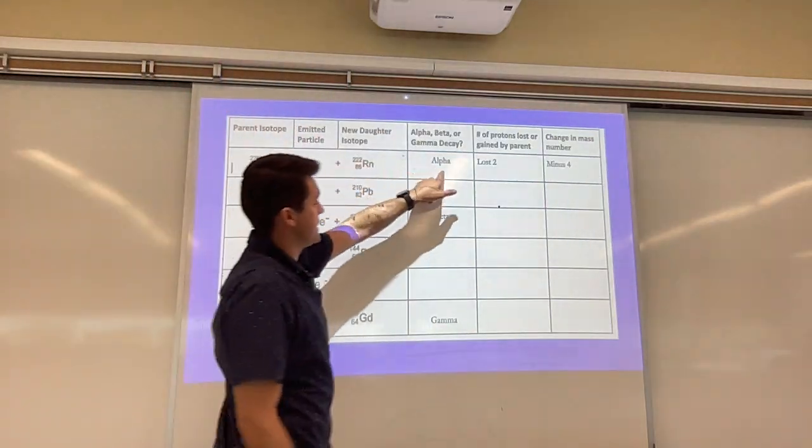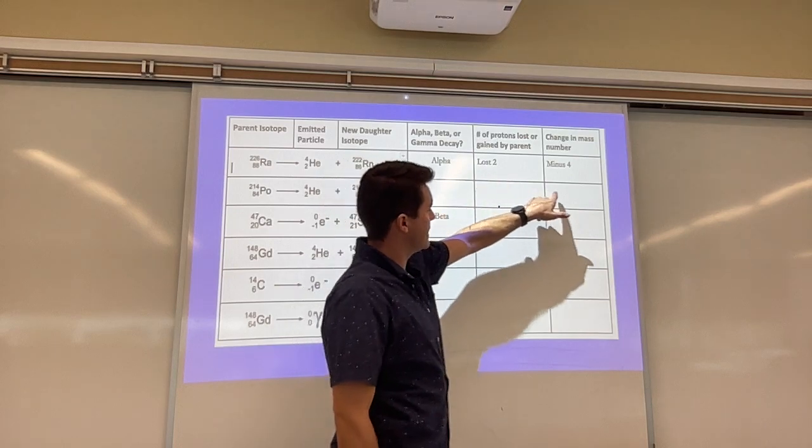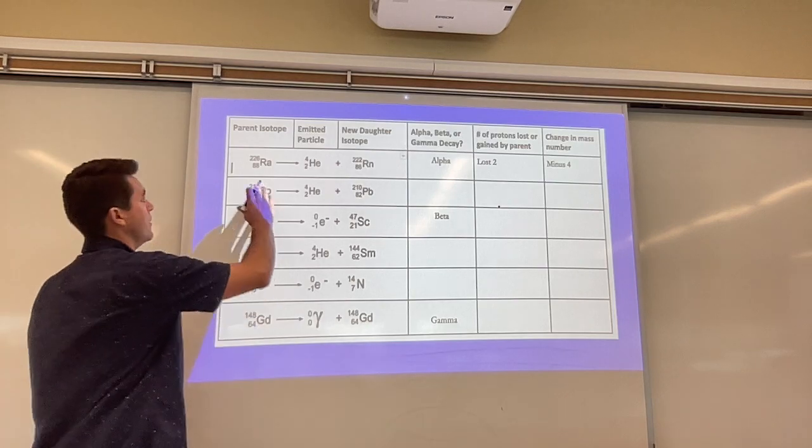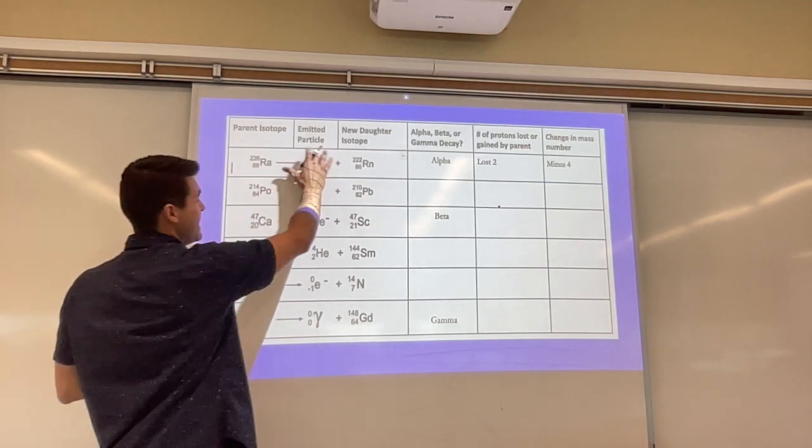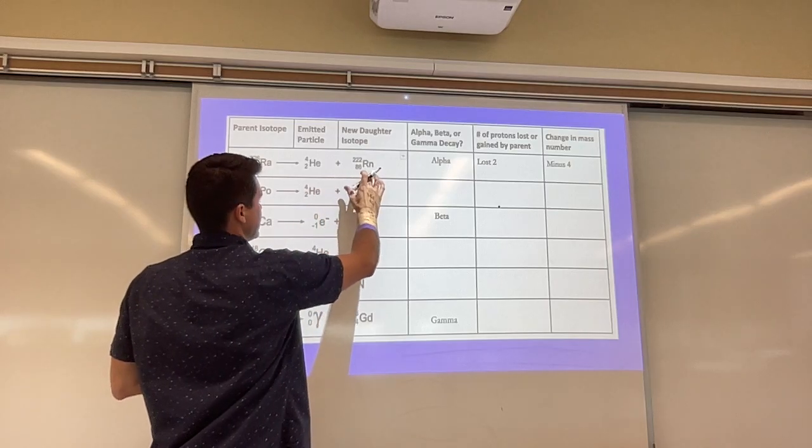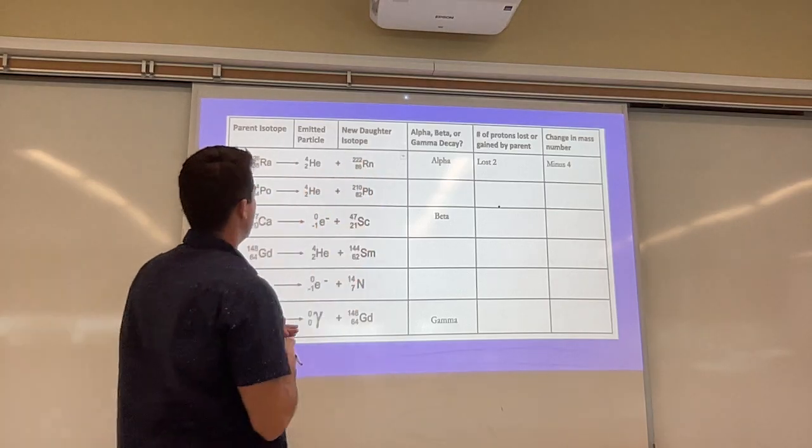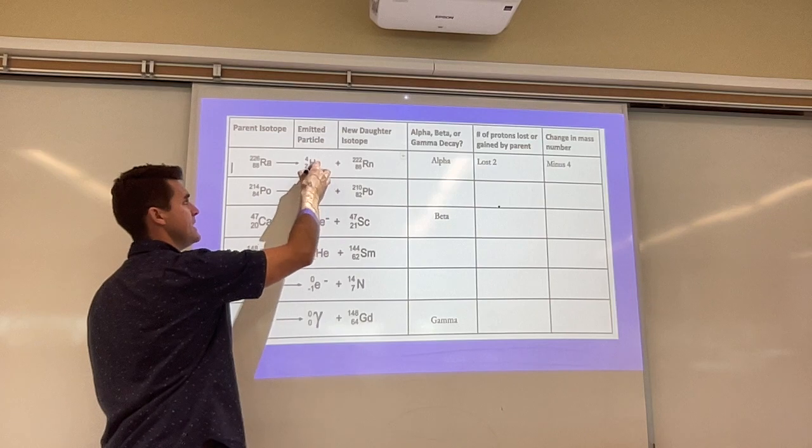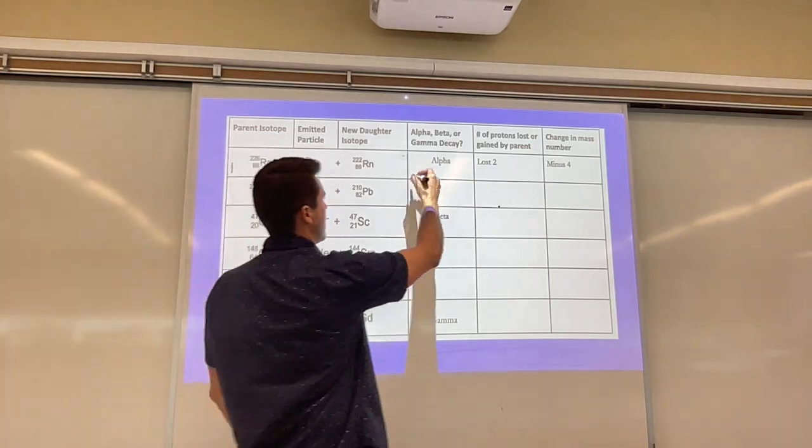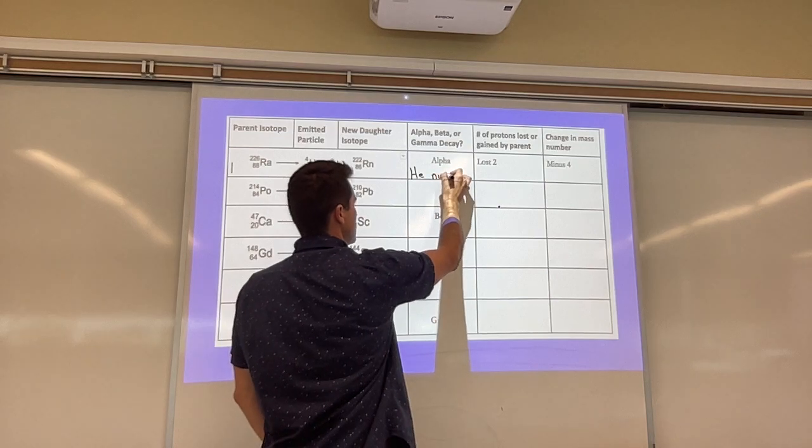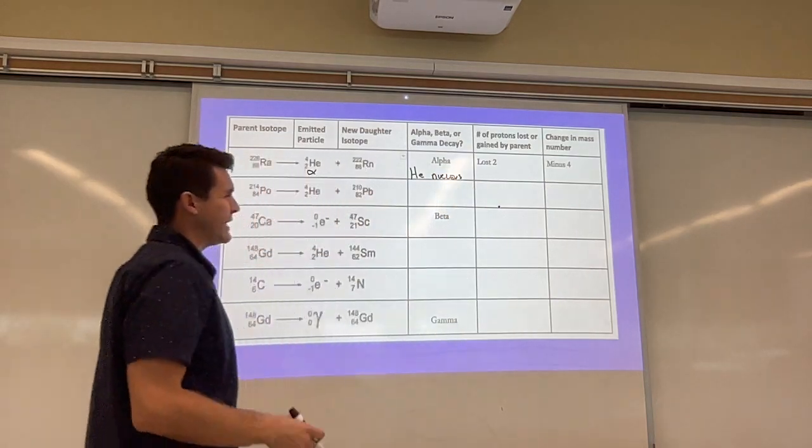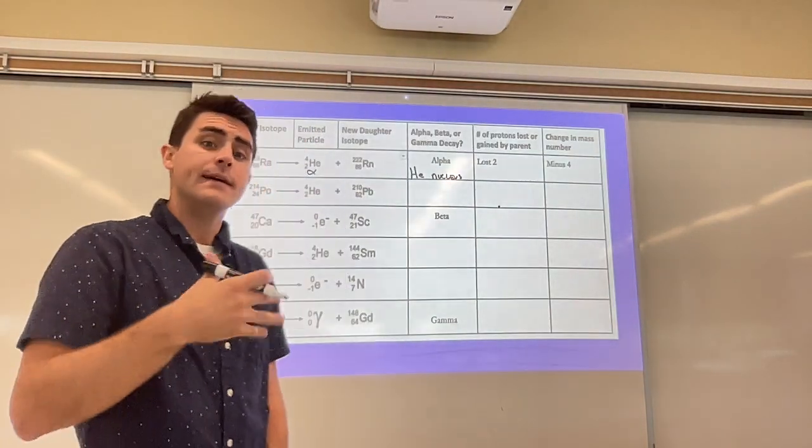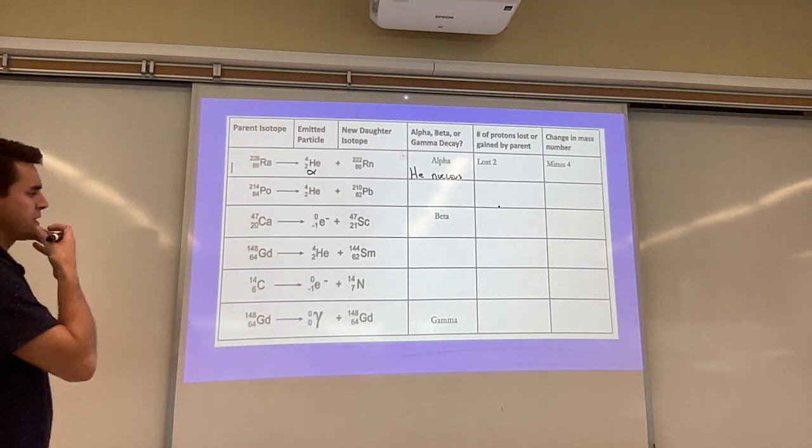The first one says alpha decay is when there's a loss of two protons and a loss of four mass particles. So I see this here and this is radon 88. I see helium right here being emitted. And then I see, so this is radium and this is radon 222. So alpha particles are these particles right here. These helium nuclei are alpha particles. So we can call this alpha. We can call this a helium nucleus. That's what these are. When a helium nucleus is emitted from the inside of another atom's or isotope's nucleus, we call it alpha decay. And it's usually associated with gamma or some other kind of radiation.